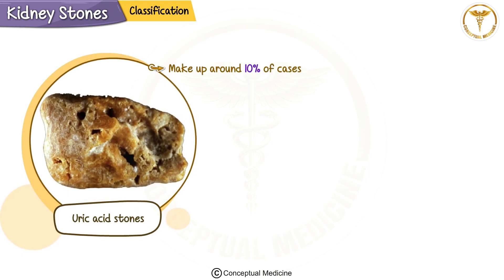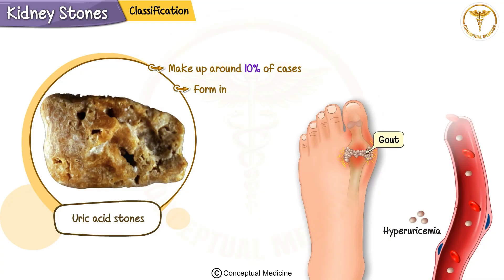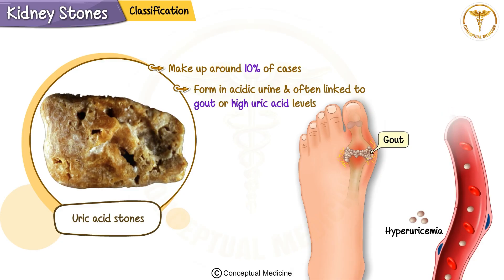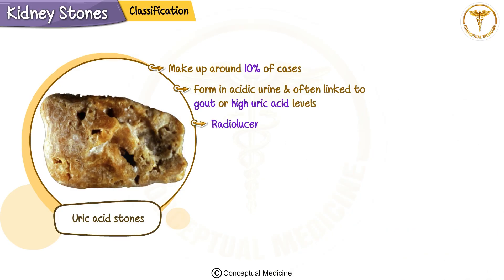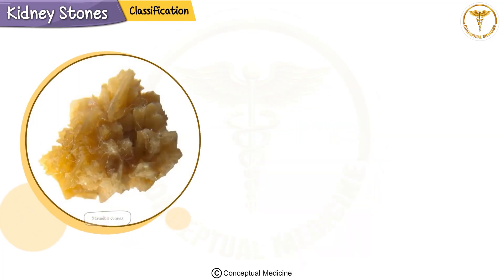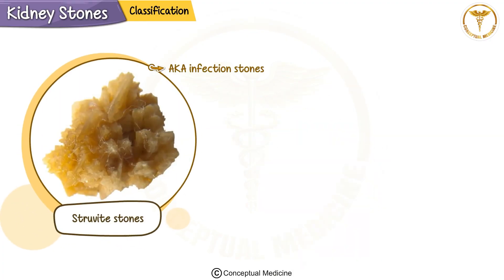Next, uric acid stones make up around 10% of cases. These form in acidic urine and are often linked to gout or conditions involving high uric acid levels. Unlike calcium oxalate stones, these are radiolucent — they don't appear on x-rays — but their crystals have a distinctive rhomboid or rosette shape.